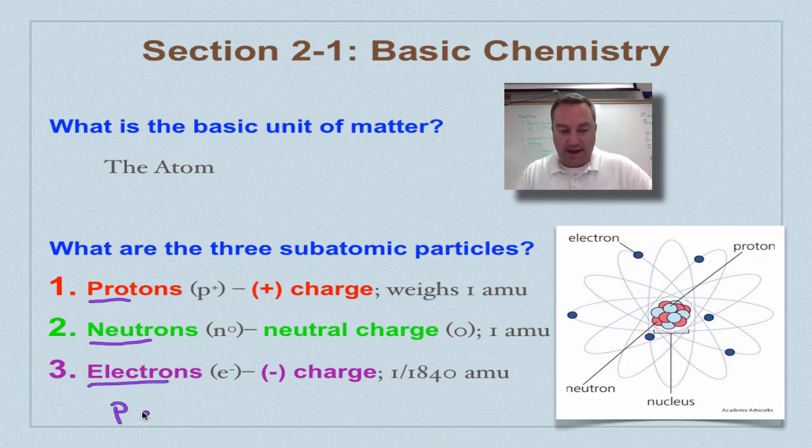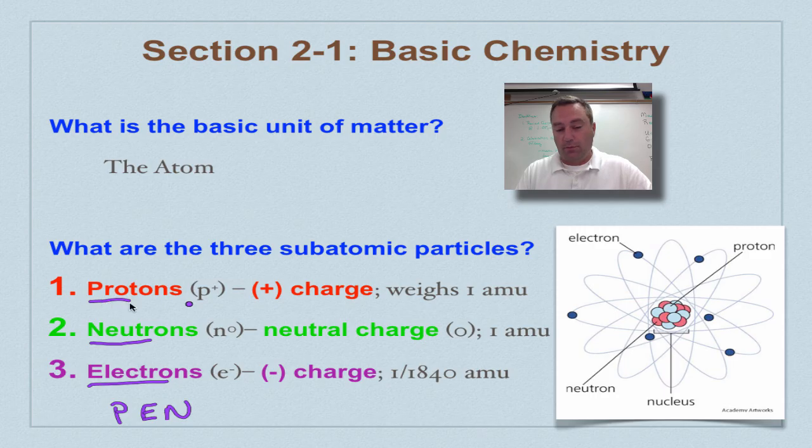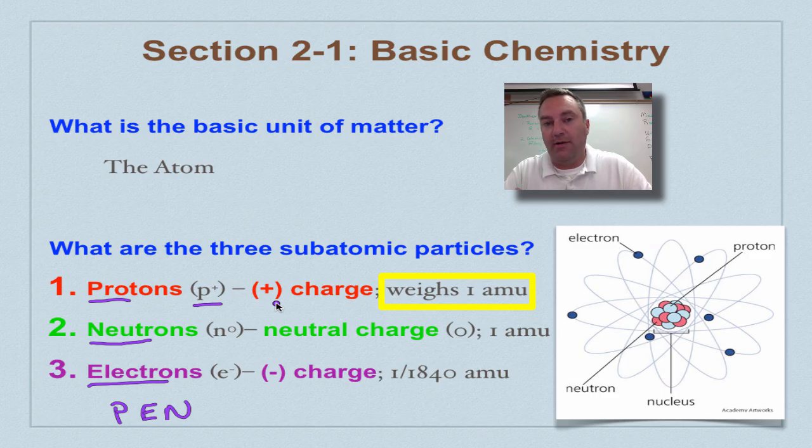You could remember them with an acronym like P-E-N, think of atomic pen: protons, electrons, and neutrons. Protons are always going to be, we're going to use the symbol P-positive, because P for proton. But the positive refers to its charge. It has a positive electrical charge. These guys are going to weigh one atomic mass unit.